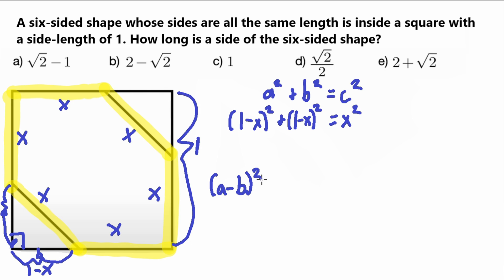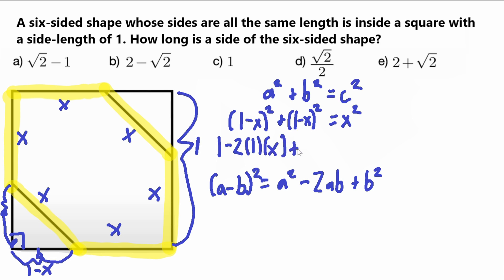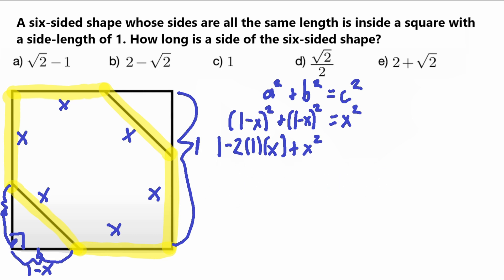Our first term is a = 1 and our second term is b = x. So expanding: 1 squared minus 2 times 1 times x plus x squared, which gives 1 minus 2x plus x squared. This is for one of the (1 minus x) squared terms. The second one is identical, so we add another 1 minus 2x plus x squared. All of this equals x squared.